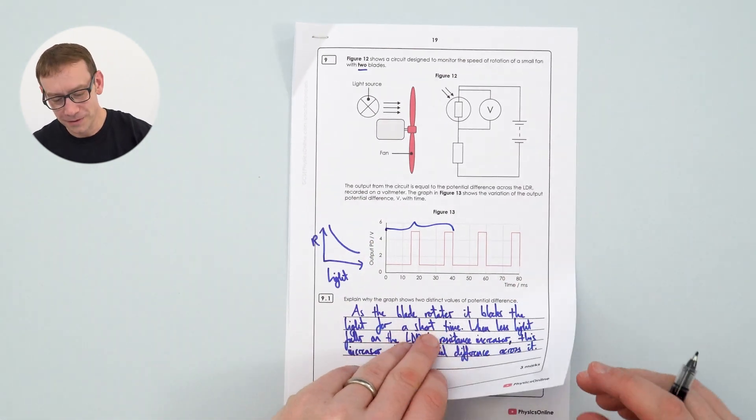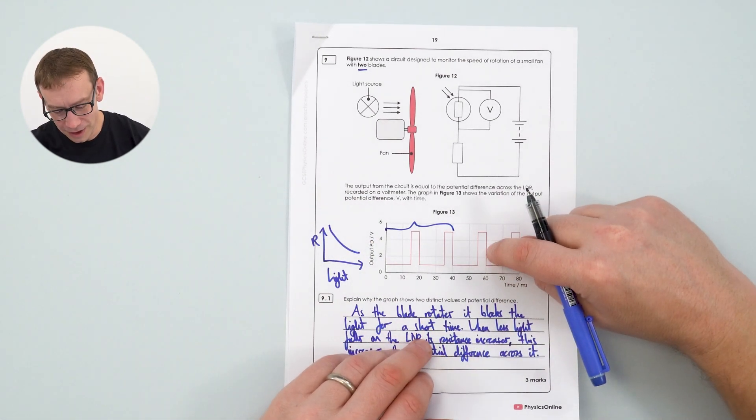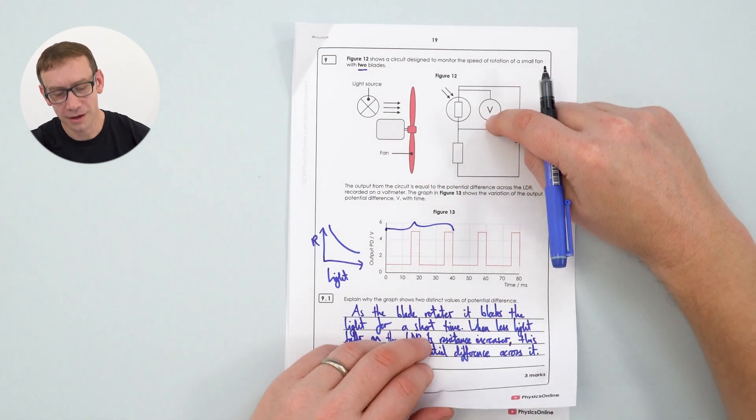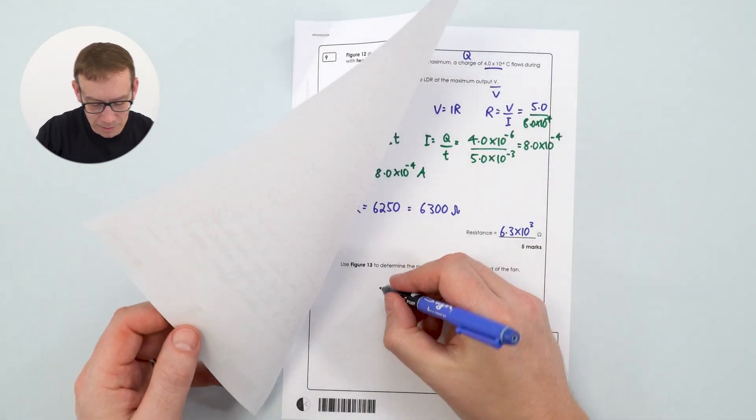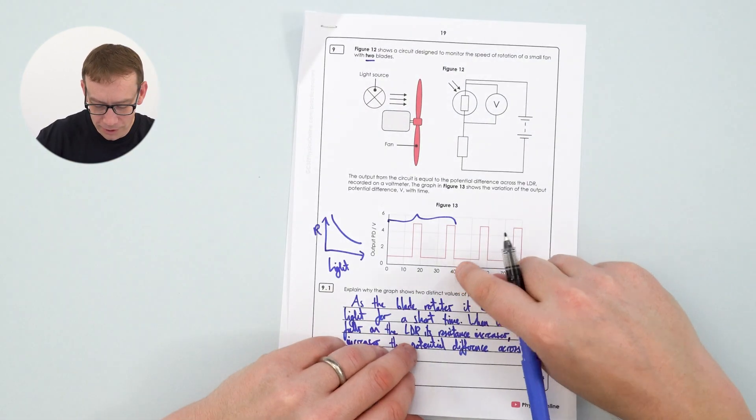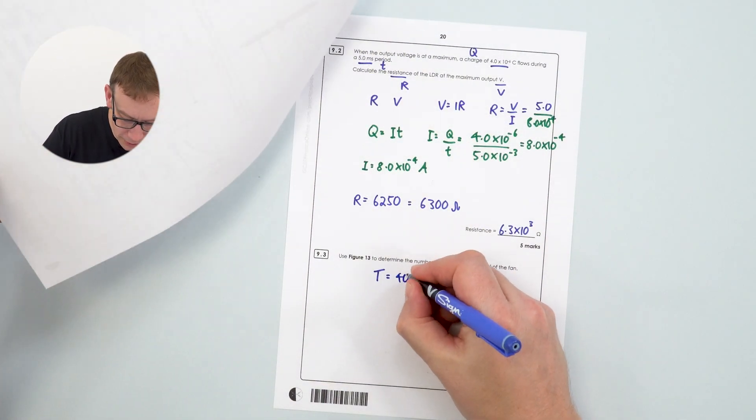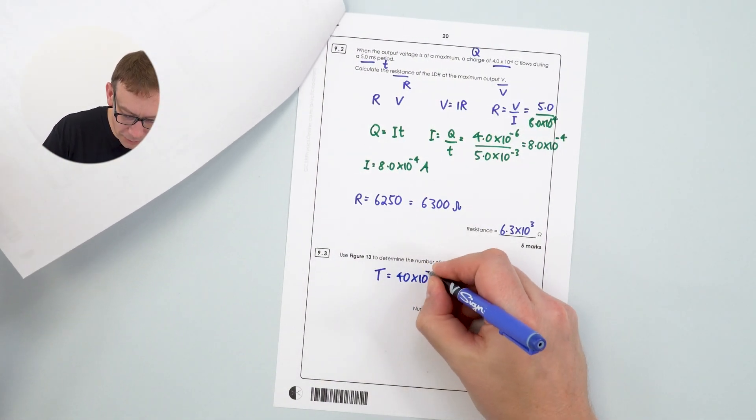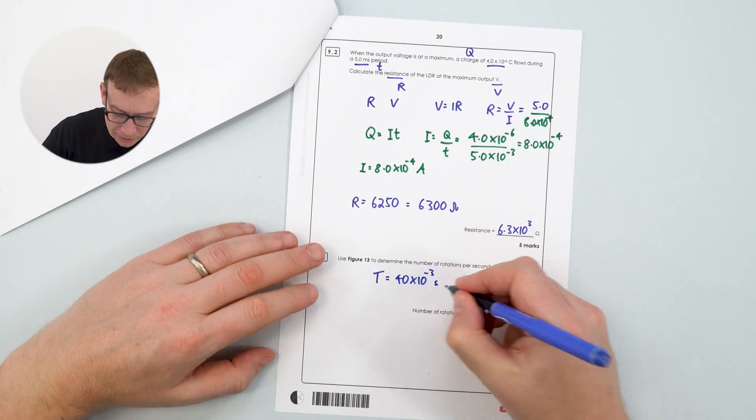So we know from looking at this figure here, and interpreting that diagram there, that the time for one rotation, which is what we call the time period, capital T, this is equal to 40 milliseconds, which is 40 times 10 to the minus three seconds.